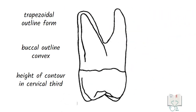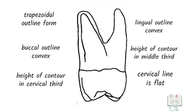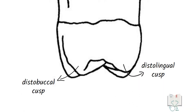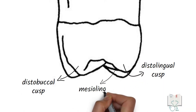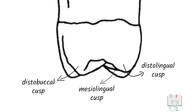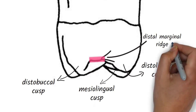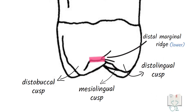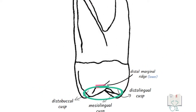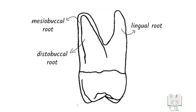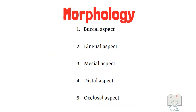Distal aspect: all features of the outline form from the mesial aspect are seen from the distal aspect as well. Apart from that, both distal cusps — distobuccal and distolingual — can be seen in front, and part of the mesiolingual cusp is also visible. The distal marginal ridge is seen running horizontally but at a lower level than the mesial marginal ridge, because of which more of the occlusal surface is visible. Unlike the mesial aspect, from the distal aspect all three roots are visible.